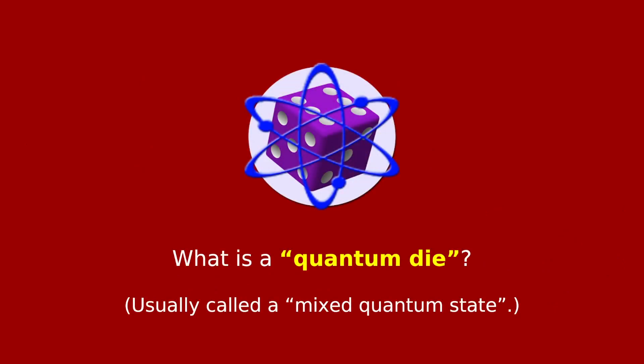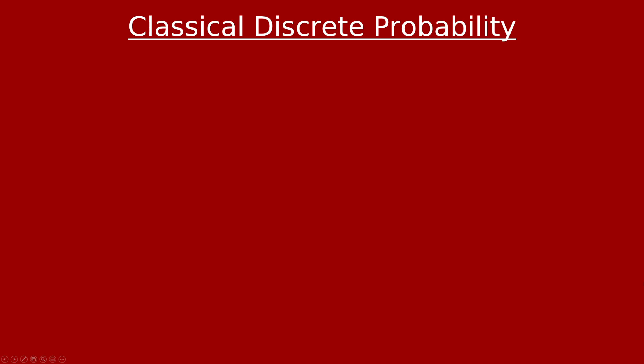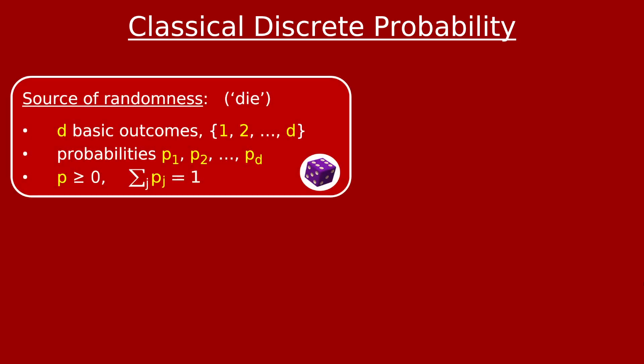So the first thing I want to talk about in this video series is what I mean by this slang, quantum die. The real term for this is a mixed quantum state. To talk about that, first I'm going to review some very basic concepts from classical discrete probability. So in classical discrete probability, the basic object of study is some source of randomness, which I'll slangily refer to as a die.